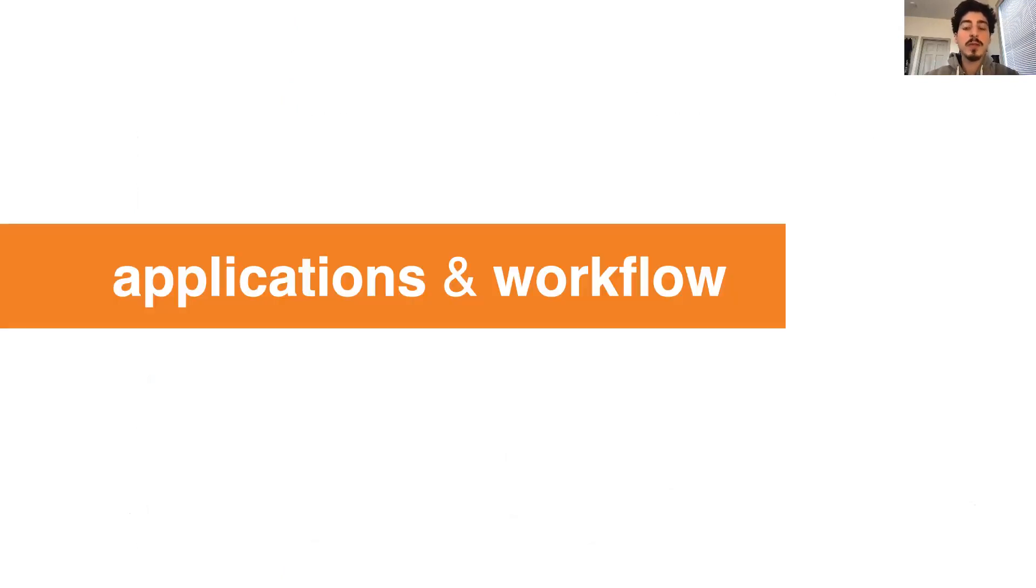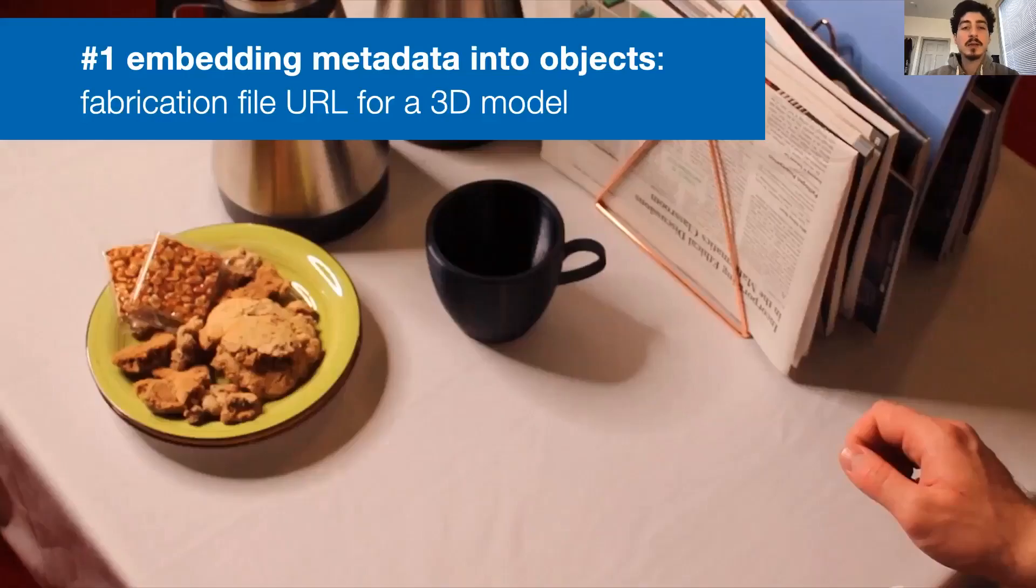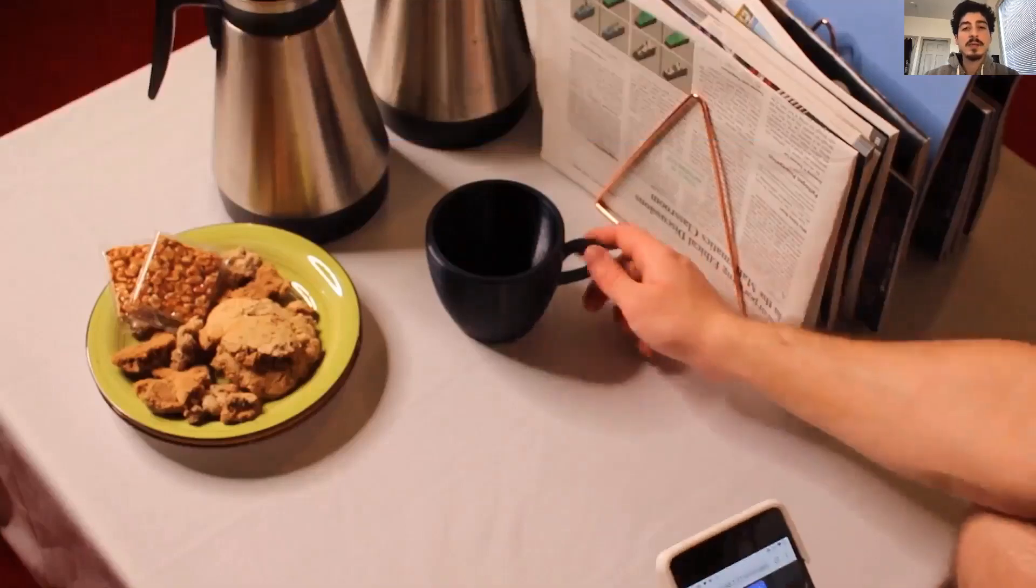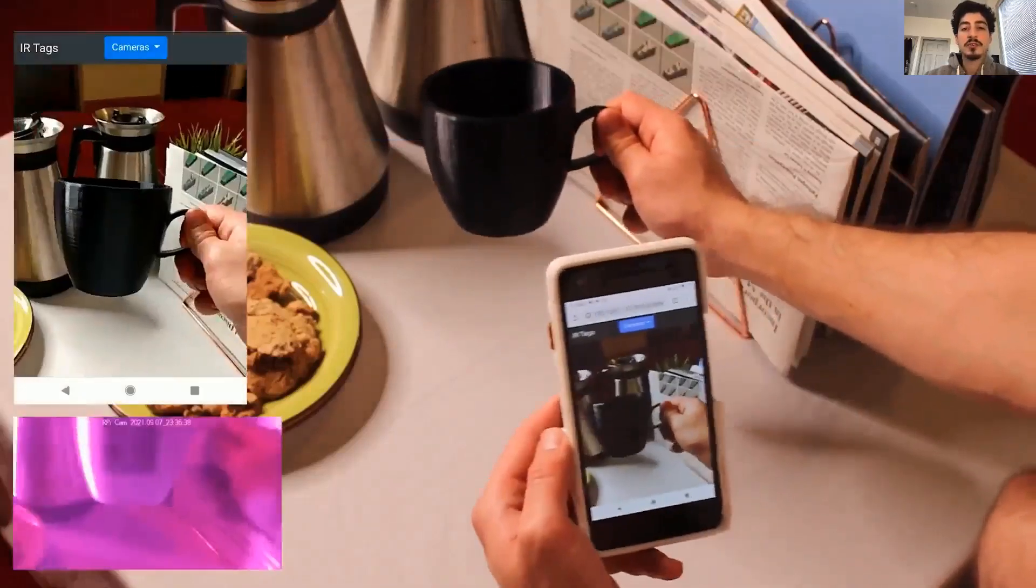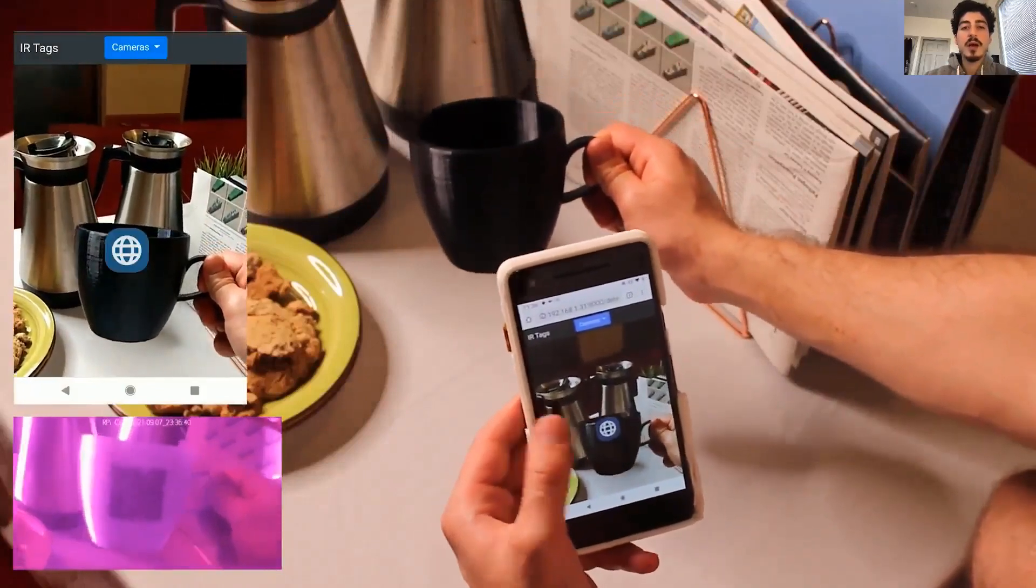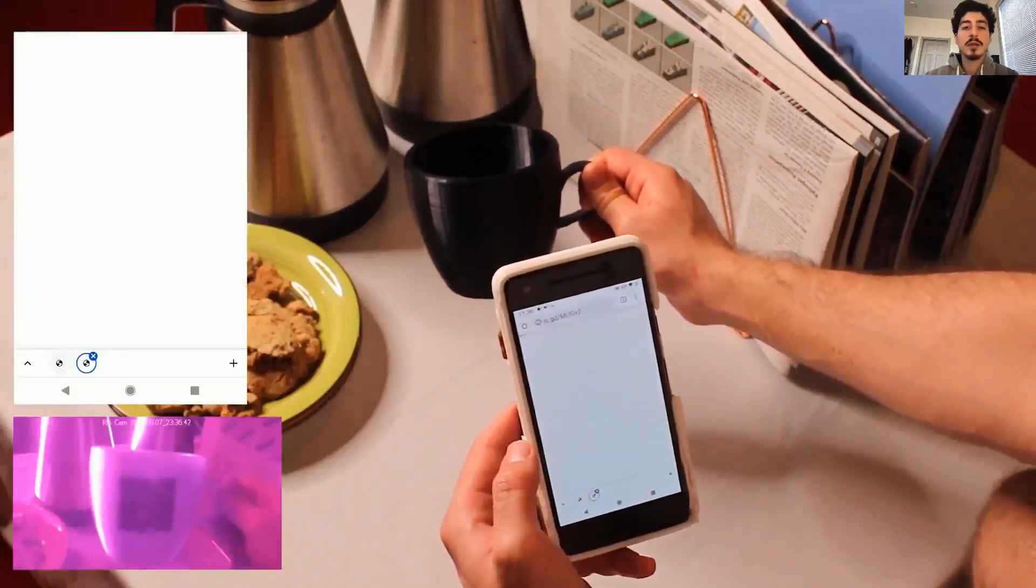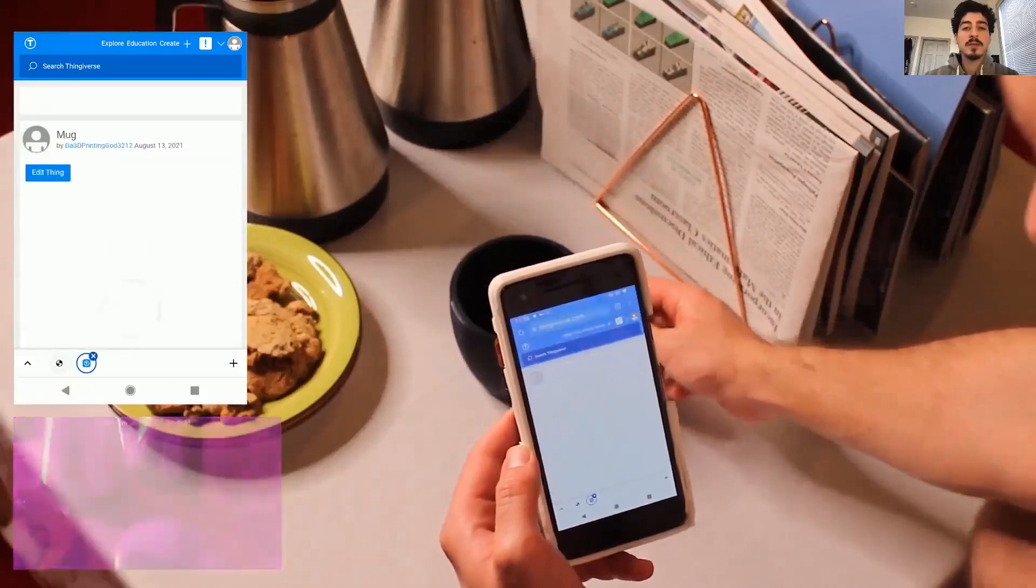So now that we know how our method works, let's talk about its applications and workflow. Infrared tags can be used to embed data about the object into the object itself. In this example, we have embedded the mug's fabrication link. If the user likes the look of an object, they can take a picture of it to download its 3D model and print a copy for themselves.